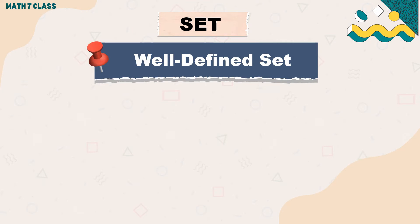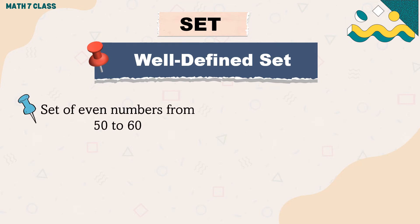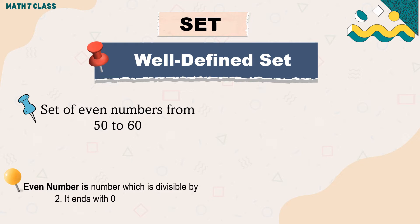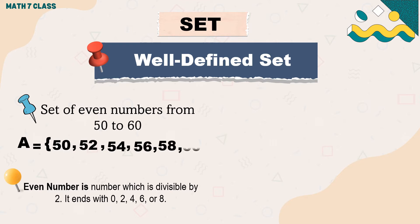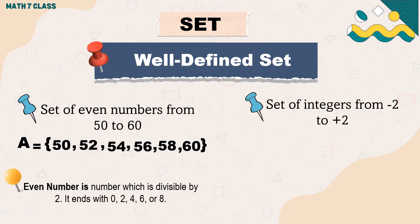Here are some examples of well-defined sets. The first one is a set of even numbers from 50 to 60. An even number is a number which is divisible by 2 — it ends with 0, 2, 4, 6, or 8. Therefore, the set of even numbers from 50 to 60 are 50, 52, 54, 56, 58, and 60.